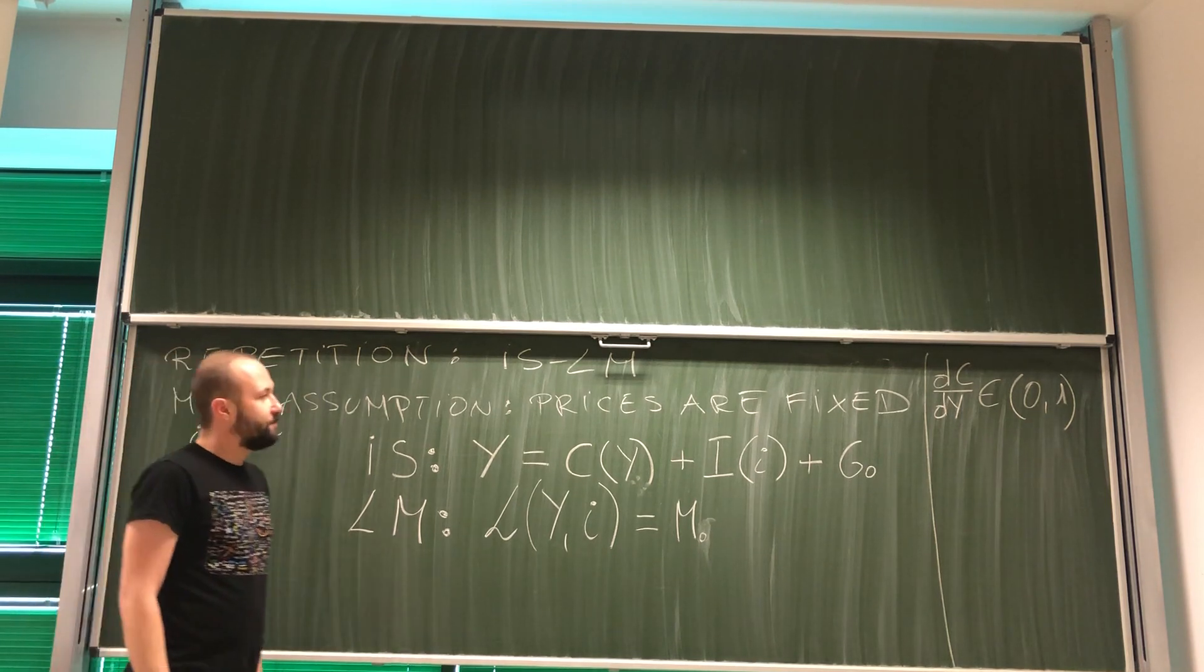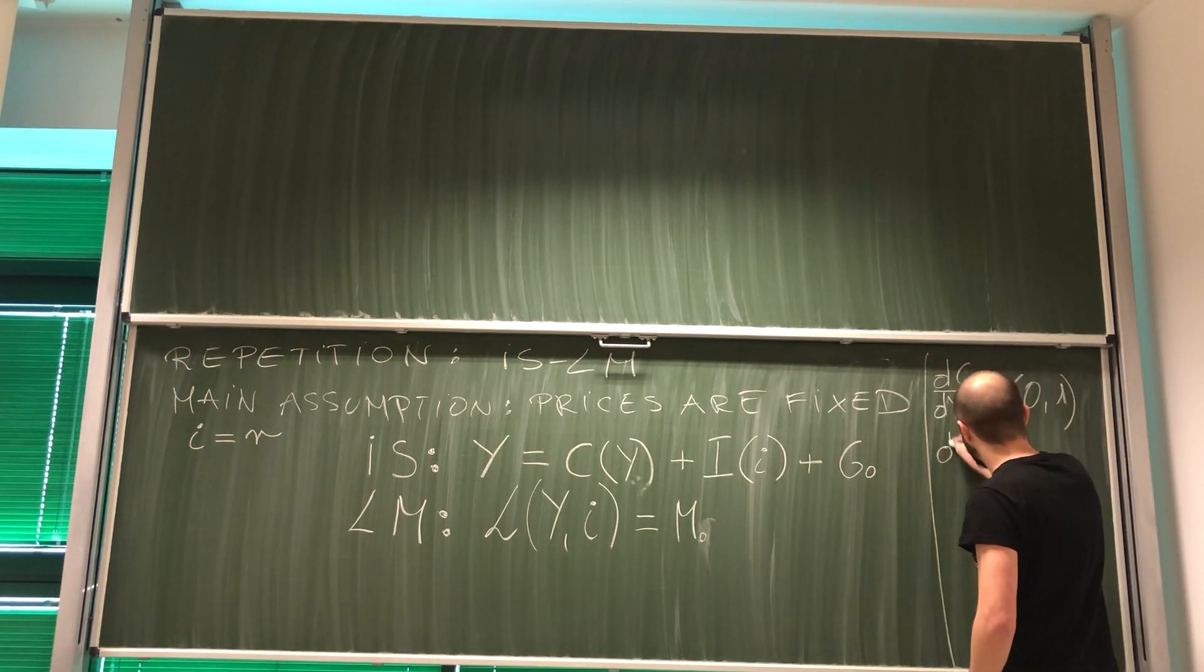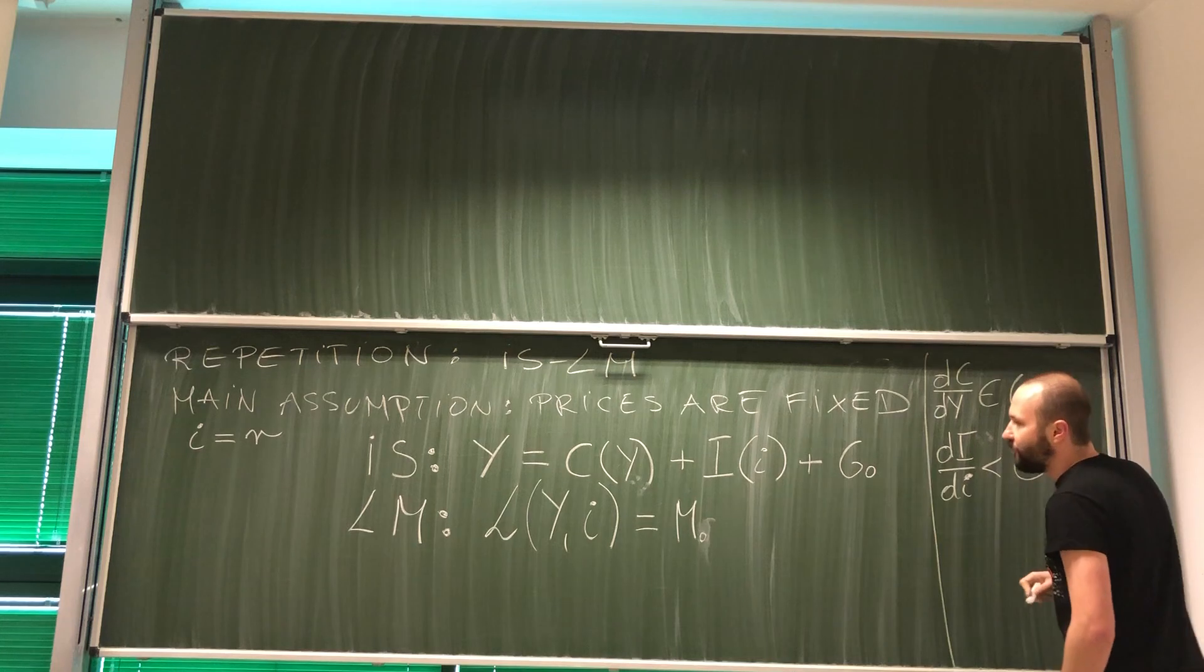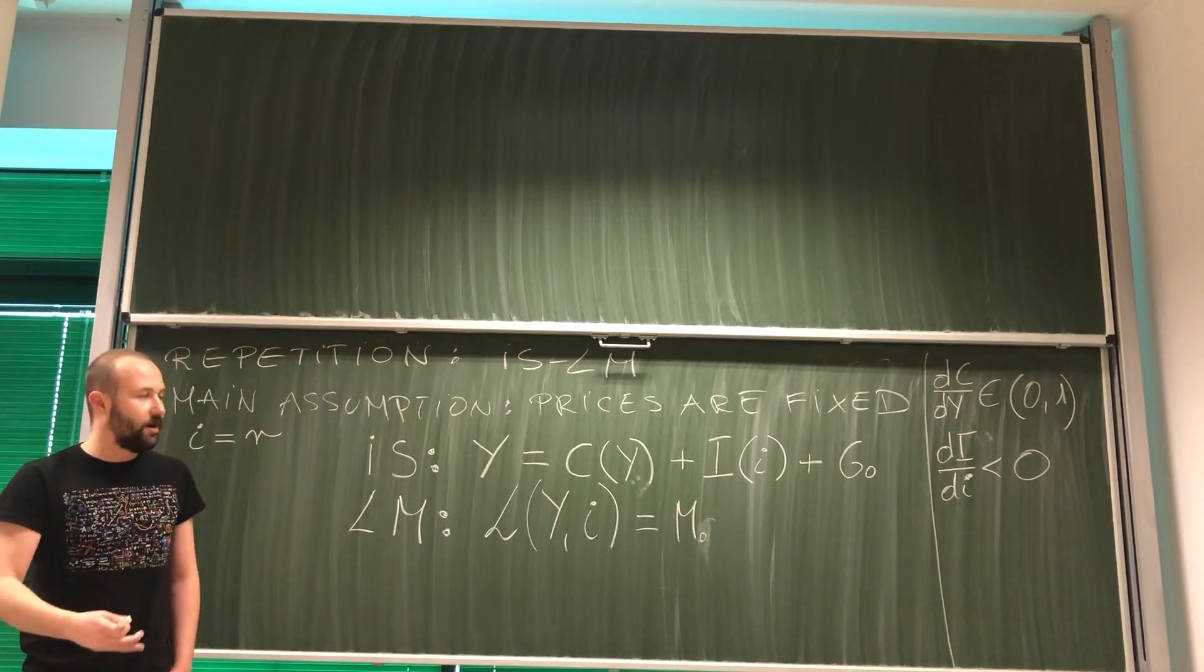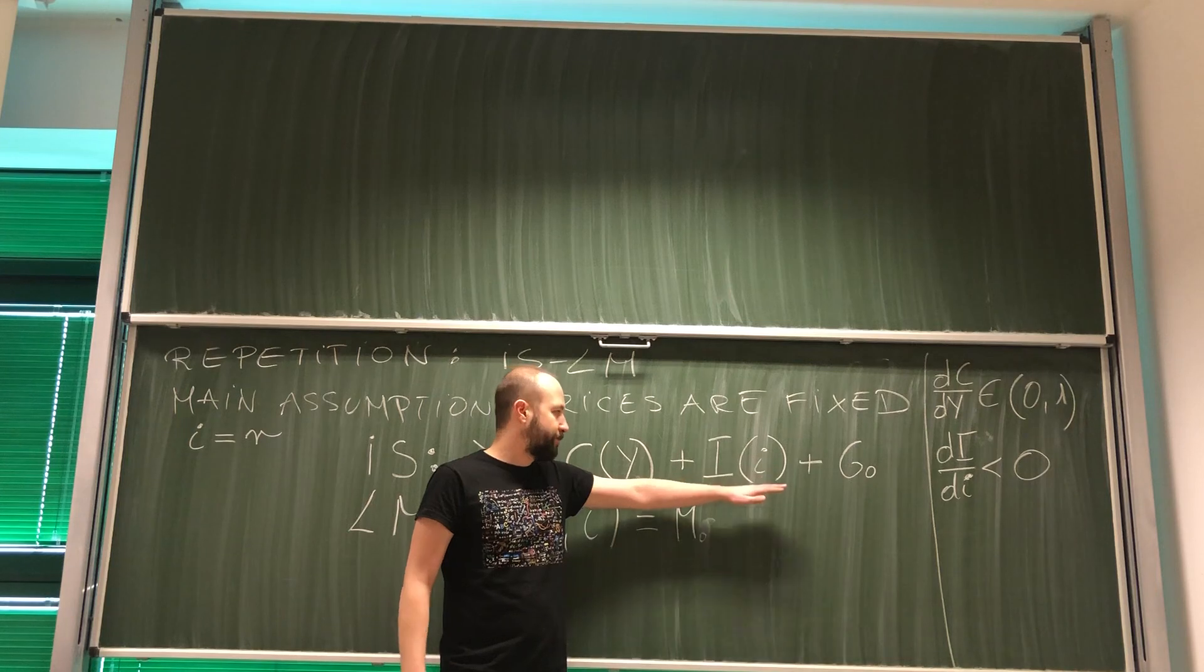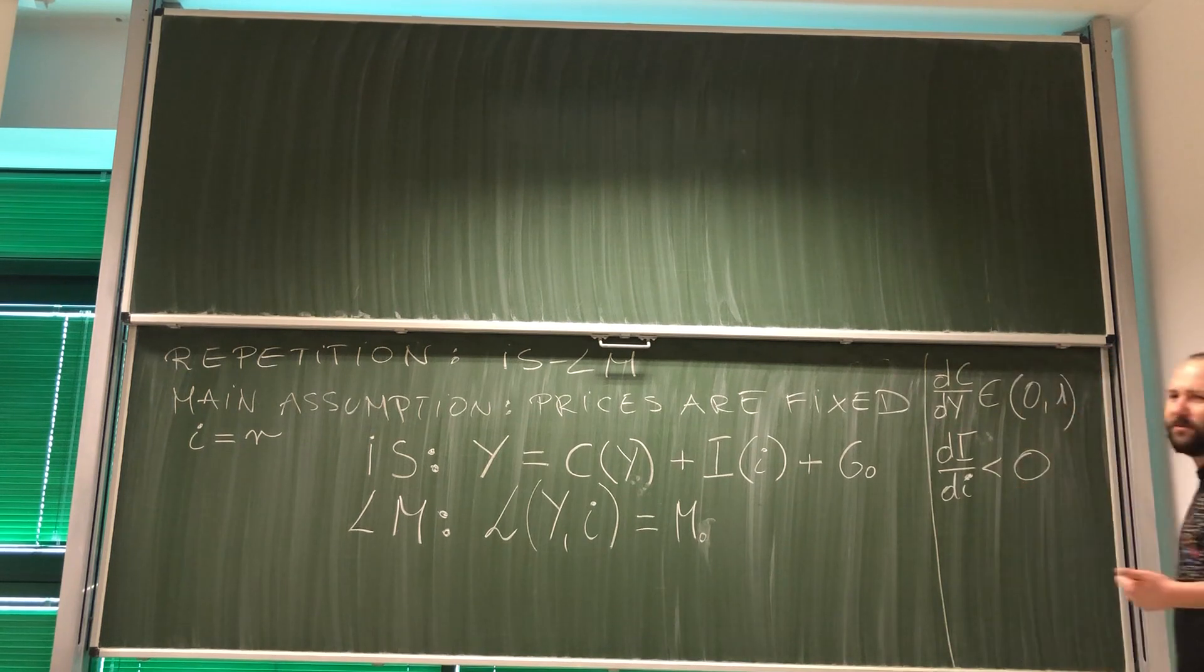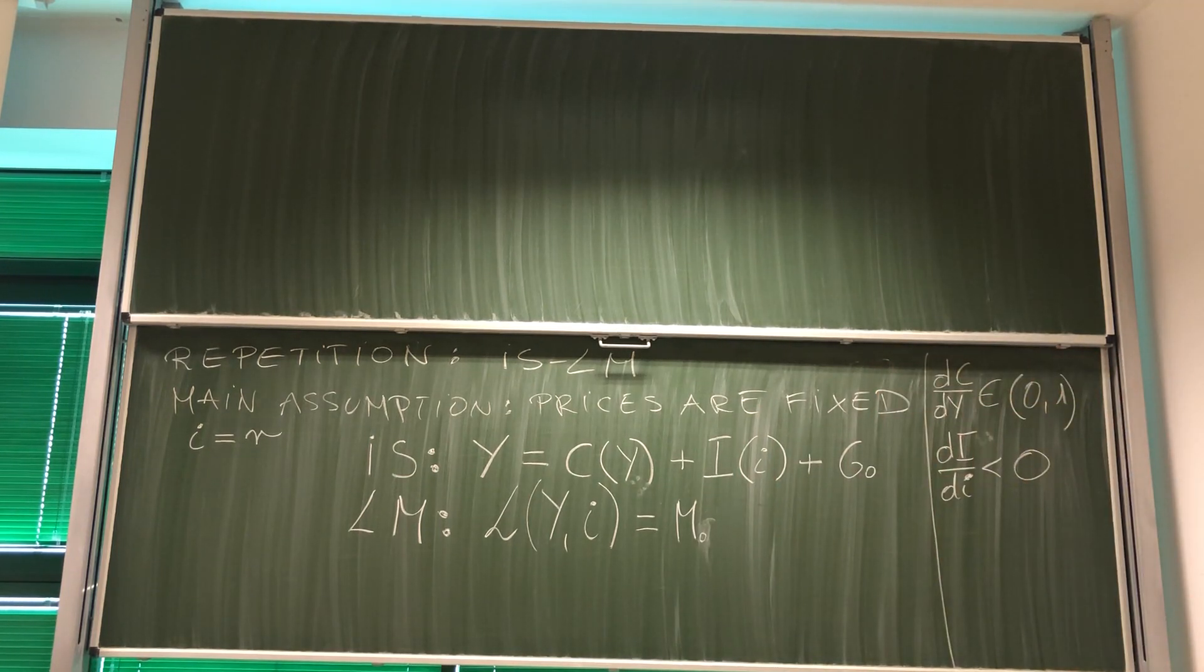Now, the second derivative we can calculate is dI/di. This is derivative of investment with respect to interest rate. This one, of course, needs to be negative. Why? The higher is the interest rate, the higher is the cost of obtaining money. So it's harder to get the money for investment. And we remember, investments are purchases of capital goods by companies. And of course, there's a second explanation. If interest rate is high, it's more profitable for companies to just keep money in the bank, instead of trying to do some investment projects.